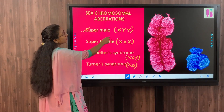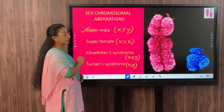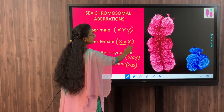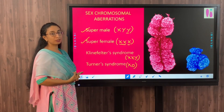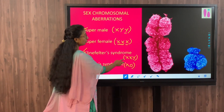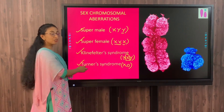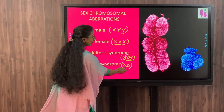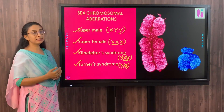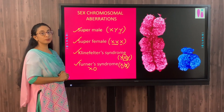In super male, there is an additional Y chromosome in addition to the normal X and Y - this occurs only in males. In super female, there is an additional X chromosome beyond the normal two X chromosomes, giving three X chromosomes total - this occurs only in females. In Klinefelter syndrome, which occurs only in males, there is one additional X chromosome alongside the normal X and Y. In Turner syndrome, which occurs only in girls, there is only one X chromosome - the other X chromosome is missing. This condition is called X0.